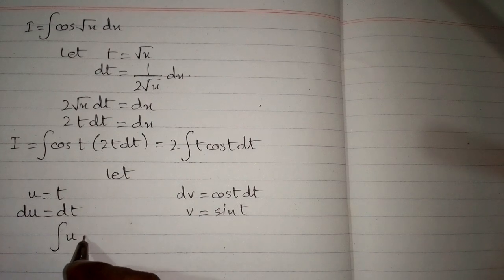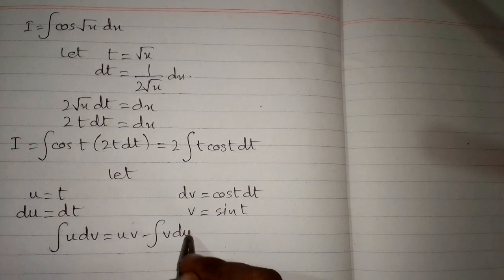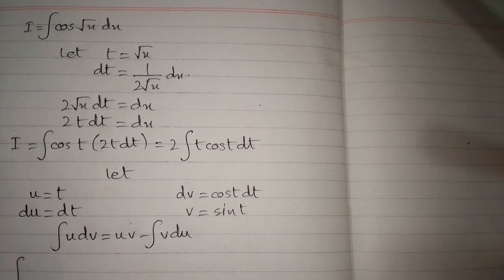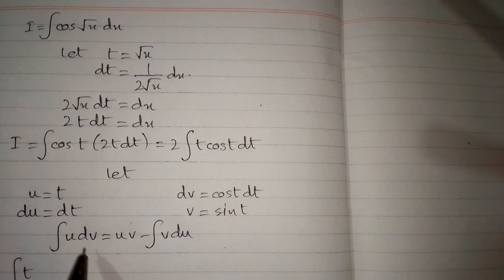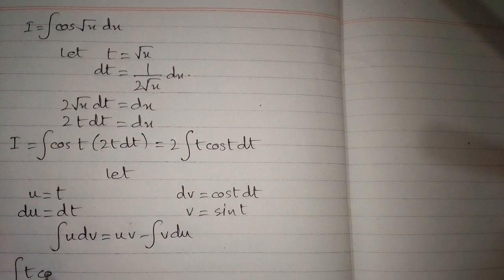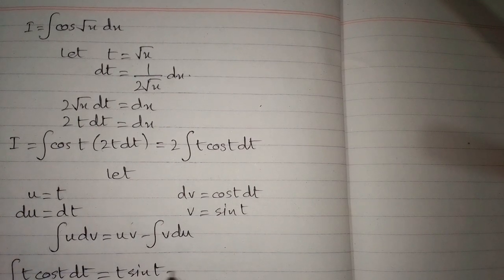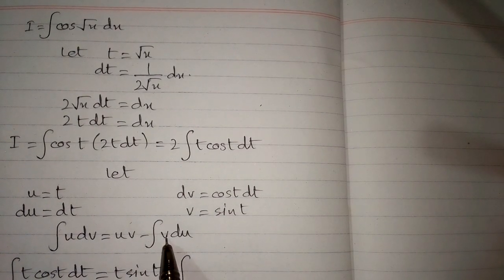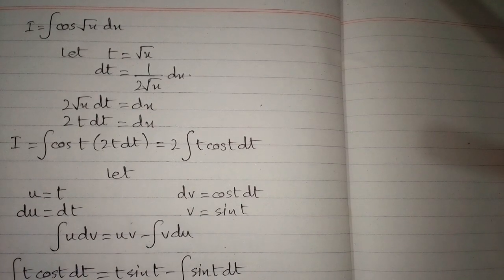The formula for integration by parts states that the integral of u dv equals u·v minus the integral of v du. Substituting our values: u is t, v is sine of t, giving us t times sine of t minus the integral of sine of t dt.